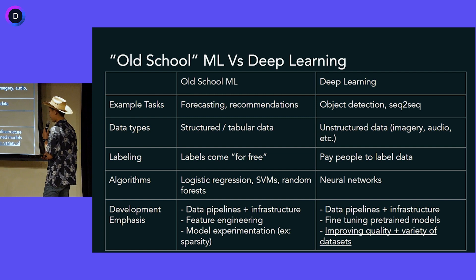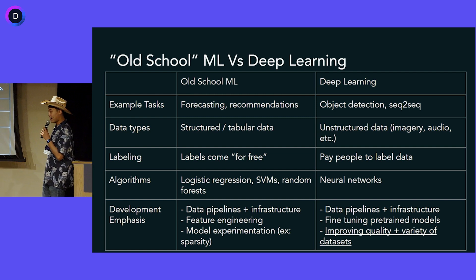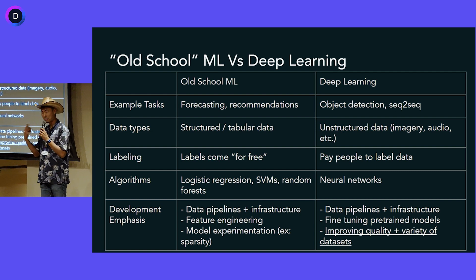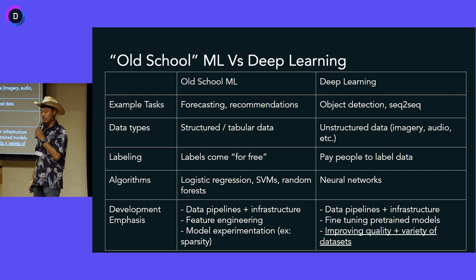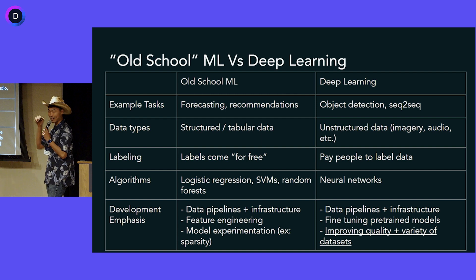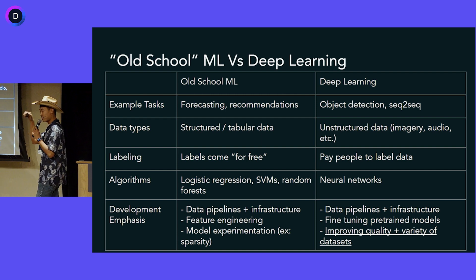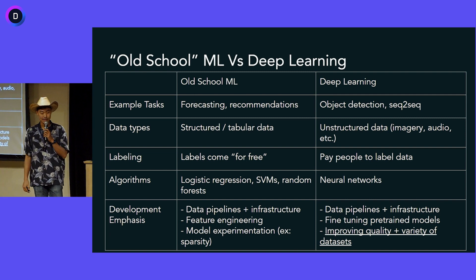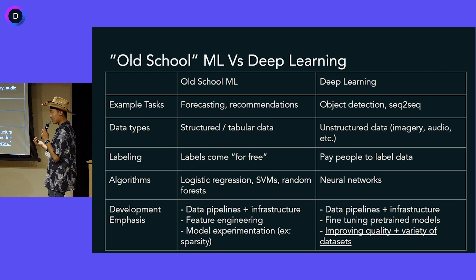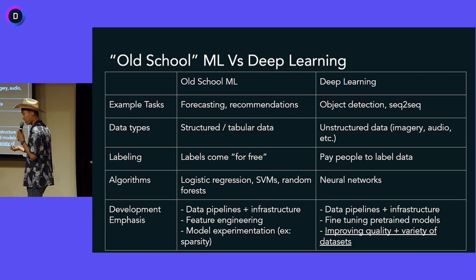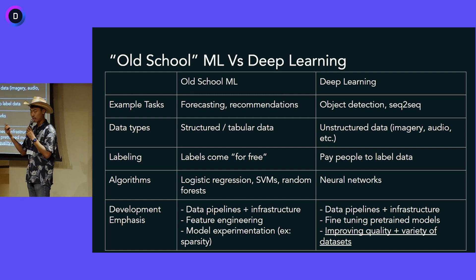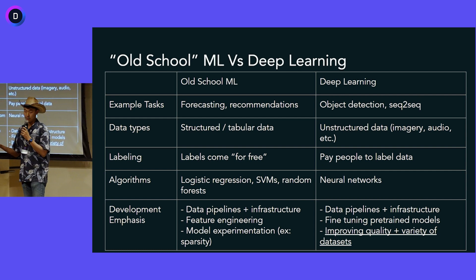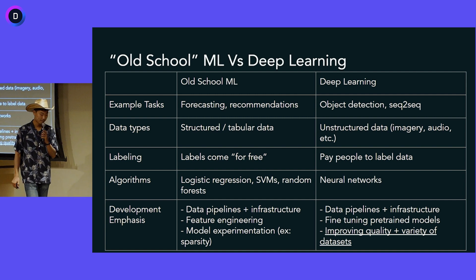The algorithms in that era were more traditional, non-deep learning approaches like logistic regression. The people who got paid the most were the data scientists, because since the data came for free you just needed to crunch through it more frequently — retrain the model every week or every day, scale it to millions or billions of data points. Most improvement came from feature engineering on the structured data or trying new algorithms. But with deep learning, you have a completely different paradigm.